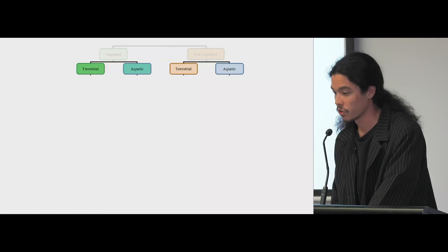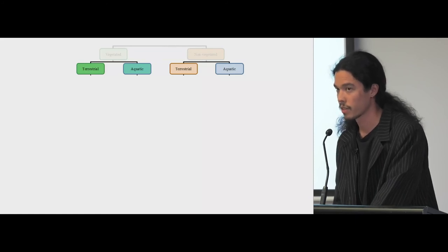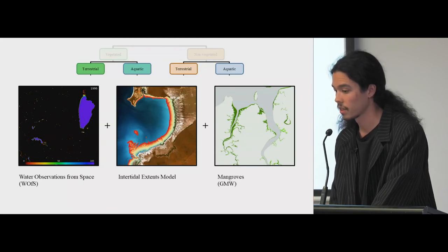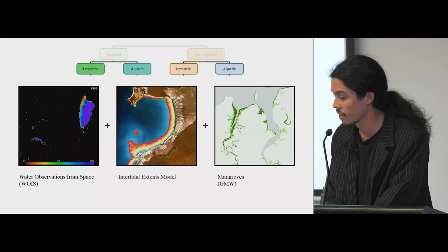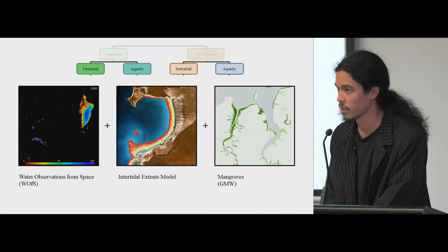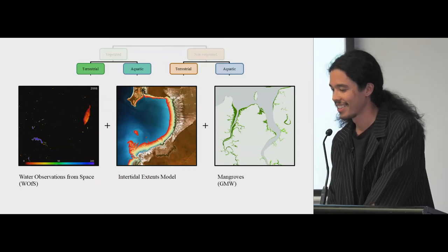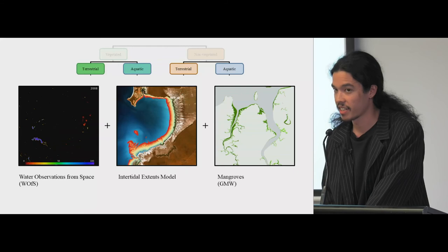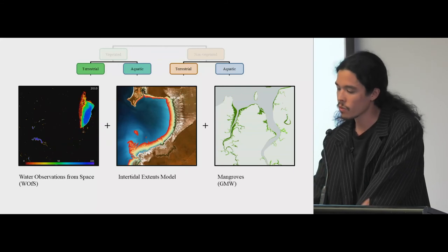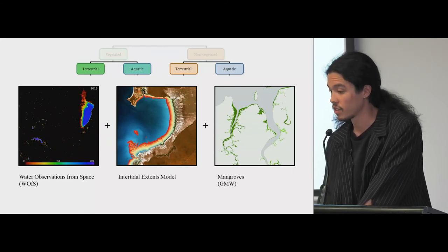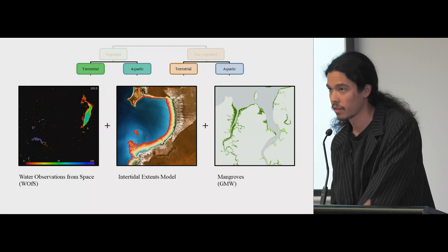When you go down to level two, we get to use all the existing products — this was a very easy part of my job. We get to use the Water Observations from Space. That's Lake George in the animation on the left, and Lake Burley Griffin, which is in Canberra — my beautiful hometown and cultural capital of Australia. We use the intertidal extents model and a mangrove layer, and you get to add these up to come up with our classification.